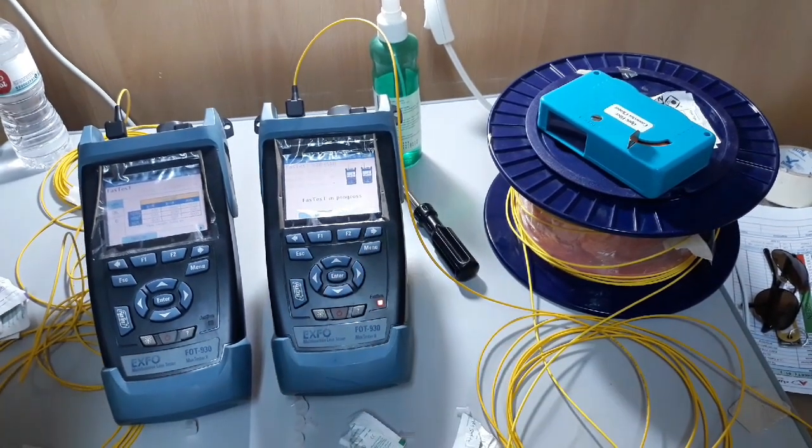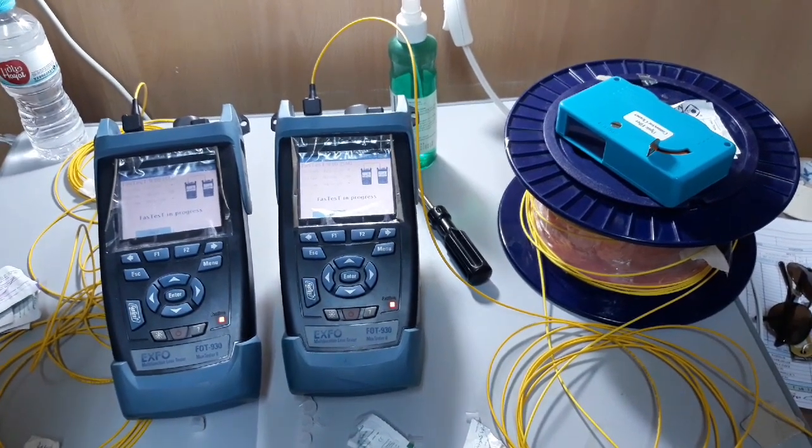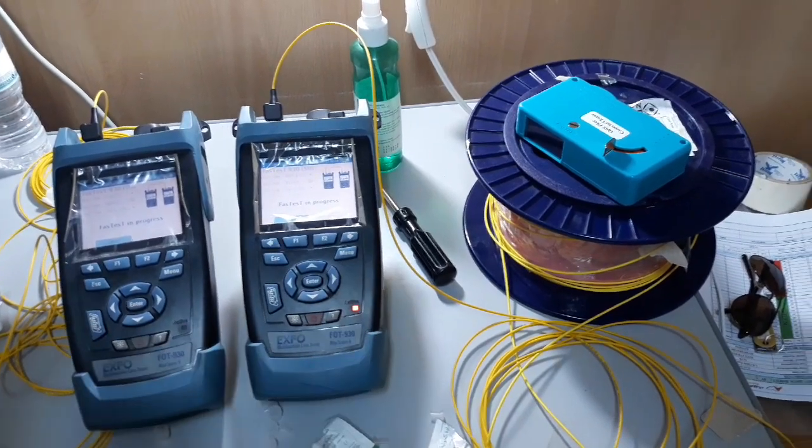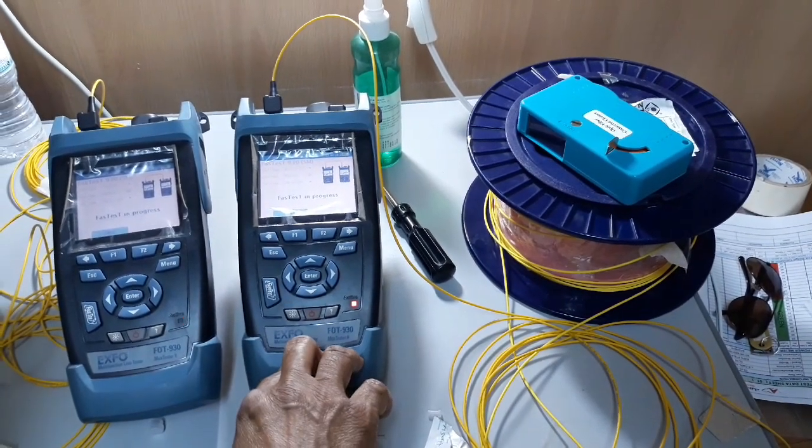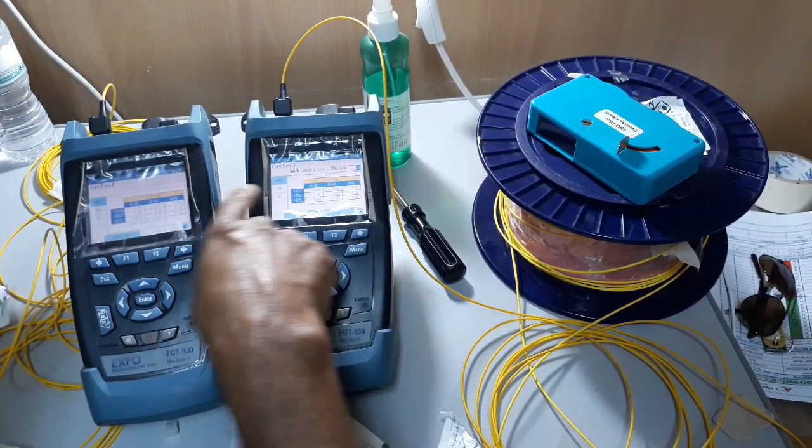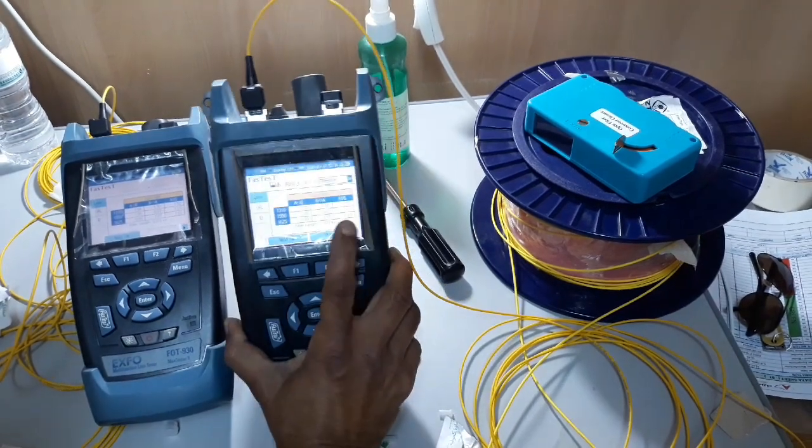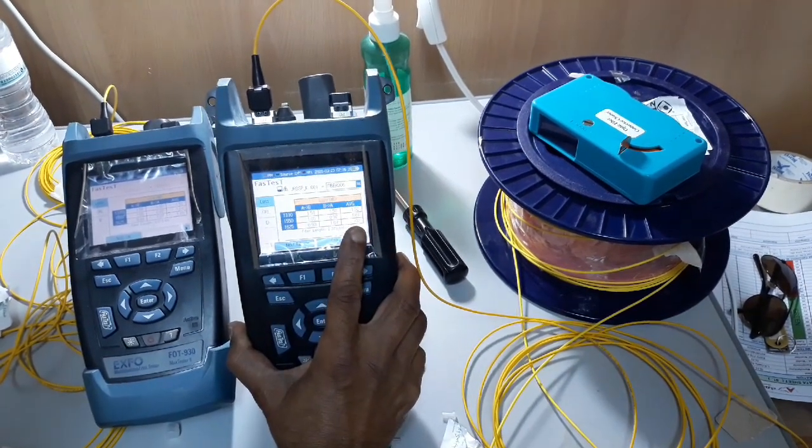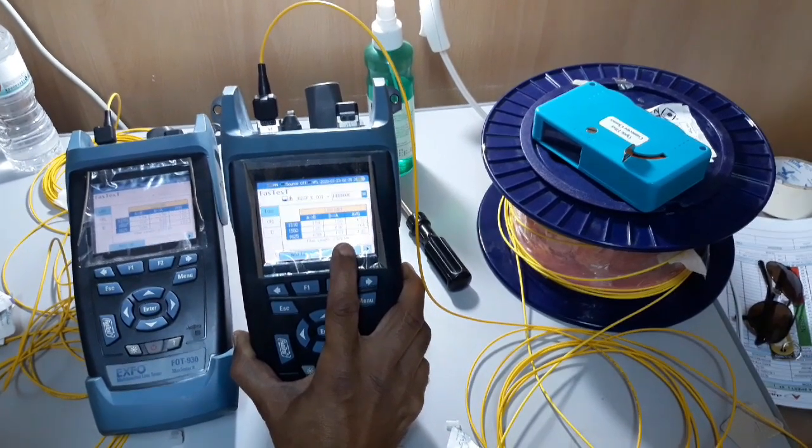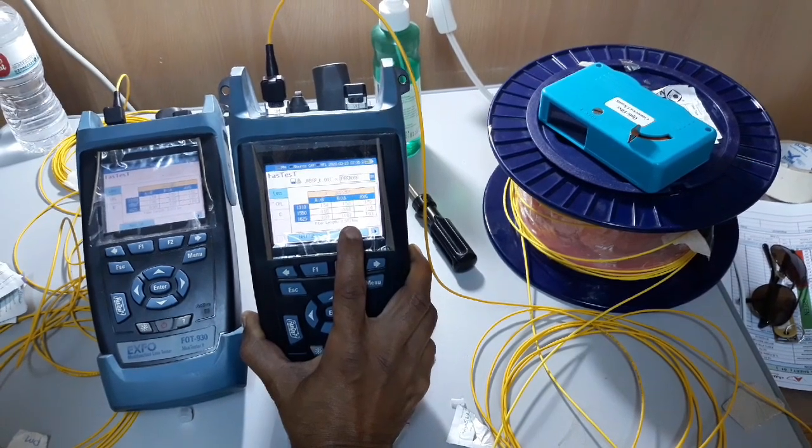Then press fastest and start button. We will get a reading. We used a dummy of 2.4 kilometer. We got a result: it is 1.5 at 1310, and 0.67 at 1550, and same like that at 1625.